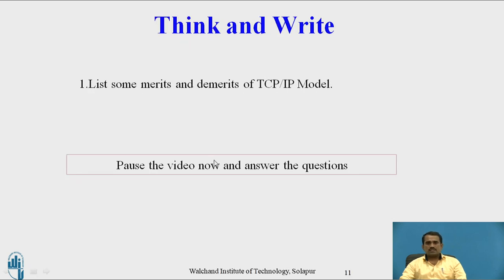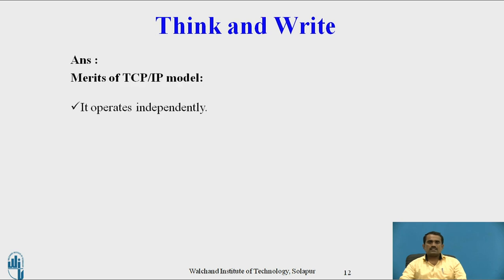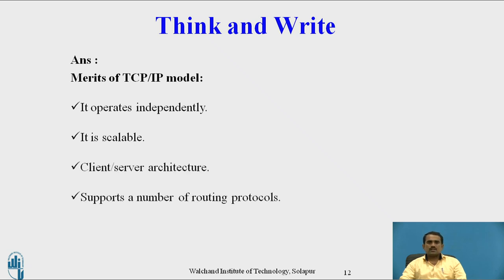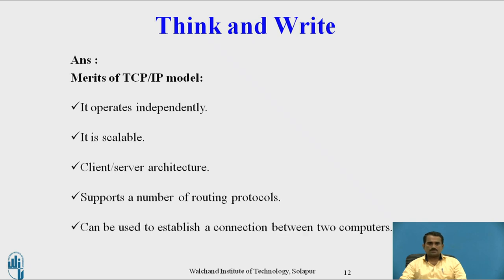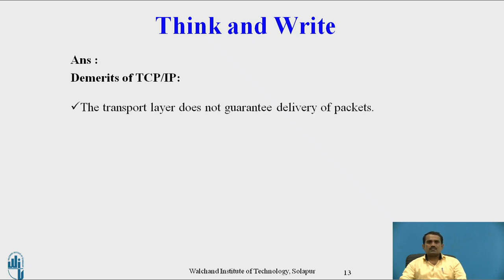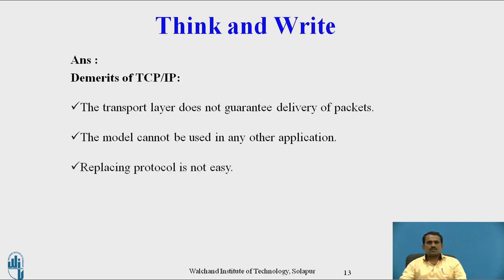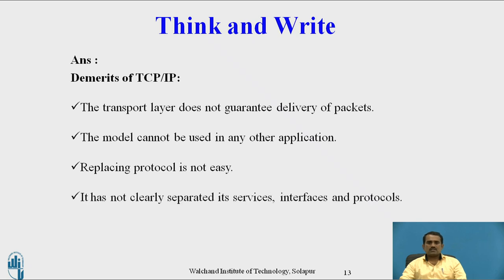The reflection question is: list some merits and demerits of the TCP/IP model. The merits are: it operates independently, it is scalable, it uses client-server architecture, supports a number of routing protocols, and can be used to establish a connection between two computers. The demerits are: the transport layer does not guarantee delivery of packets, the model cannot be used in any other applications, replacing protocols is not easy, and it has not clearly separated its services, interface, and protocols.